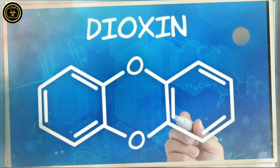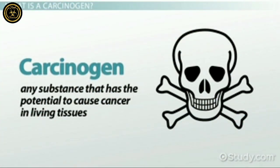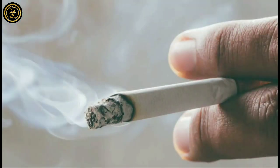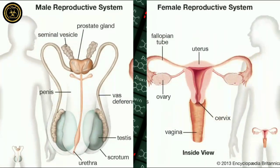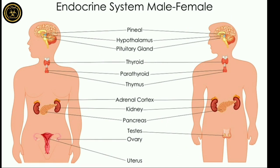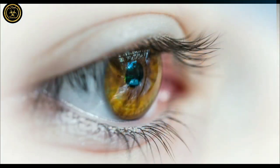Dioxins are highly toxic carcinogenic chemical compounds. In addition to causing cancer, they enter the body through the food chain. Sources include hospital waste, cigarette smoking, and tobacco smoking. Dioxins affect the reproductive system and are linked to lung cancer, heart disease, diabetes, and hormone changes.